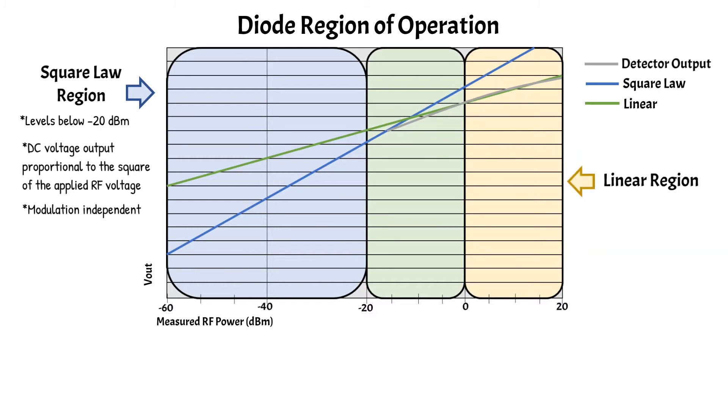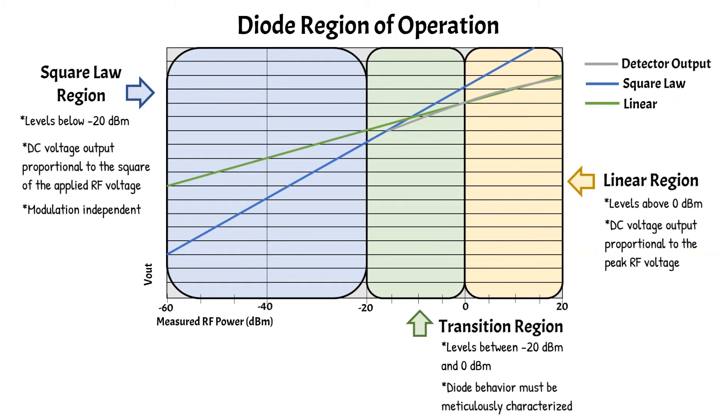The linear region is found at levels above zero dBm, where the DC voltage output is proportional to the peak RF voltage. The transition region of a diode sensor is at levels between negative 20 dBm and zero dBm. Diode behavior must be meticulously characterized within this region to produce accurate power measurements.